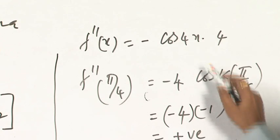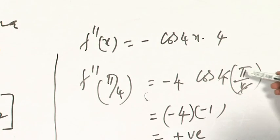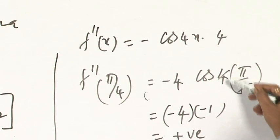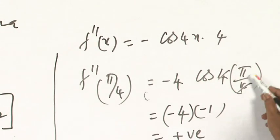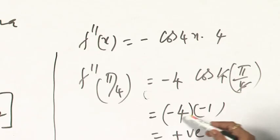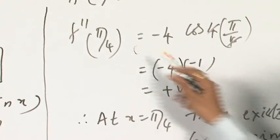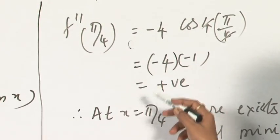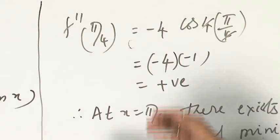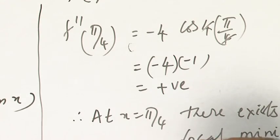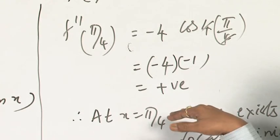Minus 4 cos(4 × π/4). If you substitute, you will get cos π, which is minus 1, so minus of minus gives positive. f''(π/4) is positive. If f'' is positive, that means f(x) has a minimum at that point.